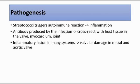So when there is a streptococcus infection, the body produces antibodies to fight against the infection, and these antibodies will cross-react with the host tissue in the valve, myocardium, and also the joints. That's why this will cause inflammatory lesions in many systems, and some of the severe damages include valvular damage, especially seen in the mitral and aortic valve.